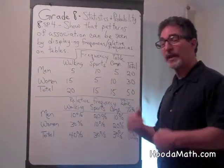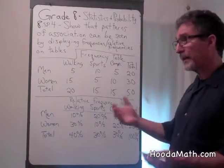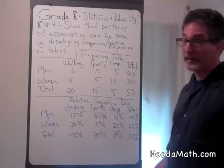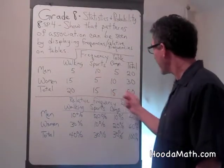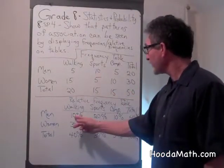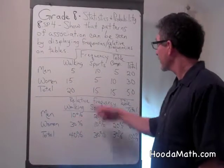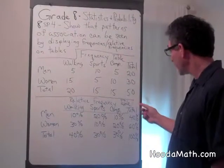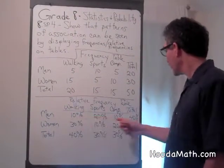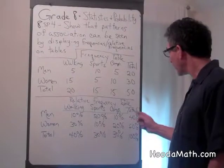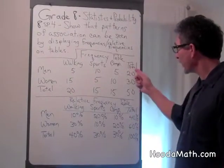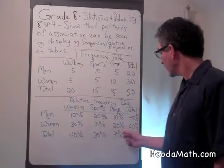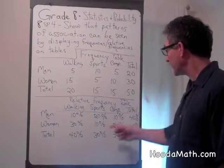Now, let's say we wanted to use this as a relative frequency — like how many out of 50 would be doing these activities? Five out of 50 is 10%, ten out of 50 is 20%, five out of 50 is 10%. Men are 40% of the survey, 20 out of 50 people. The women were 60% of the people, 30 out of 50 people.